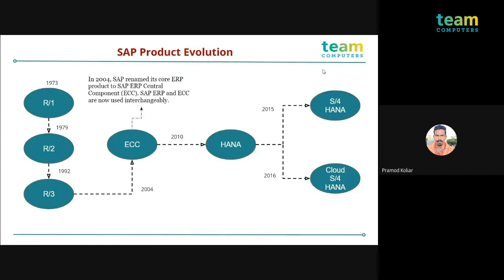SAP renamed this ERP product to SAP ERP Central Component (SAP ECC) with a changed interface. If you hear someone speaking about SAP ERP or R3 environment, it's nothing but SAP ECC. The only difference is the database used — it can be any particular database like Microsoft, Oracle, or anything. This entire application dominated the market for a very long time, but SAP realized the computing power required to process end user requests was taking longer than it should.